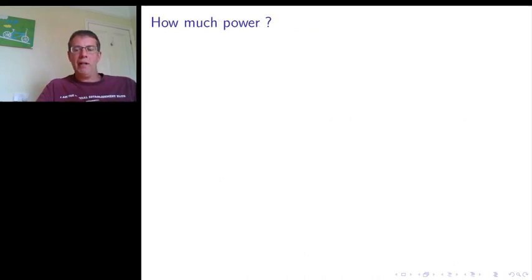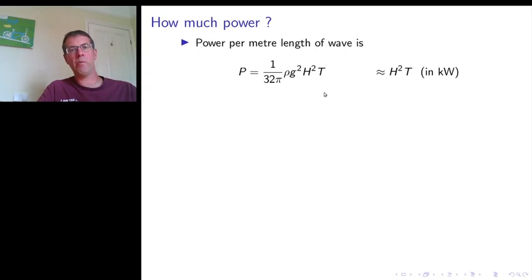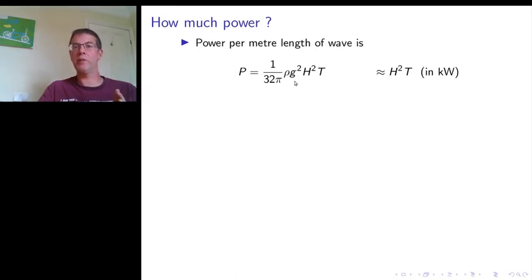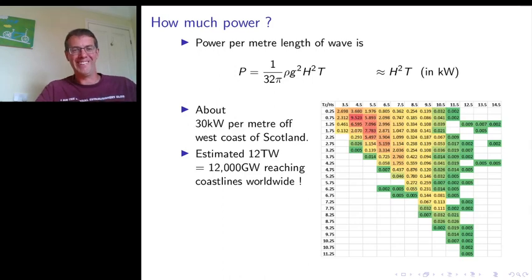How much power does a wave possess? You can do a calculation based on the theory described, and this is the mathematical formula for the power of a wave of height h and period T. It doesn't involve lambda directly because lambda and T are connected to one another in a non-trivial way. The formula also depends on g — gravity — because gravity drives the rise and fall of the surface, and rho — the density of water. When you plug in the numbers, power is approximately h² × T in kilowatts.